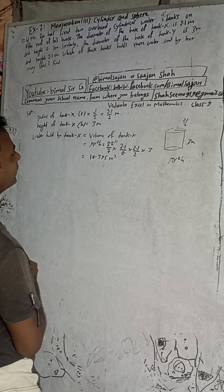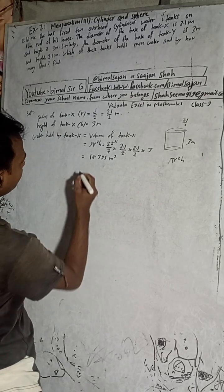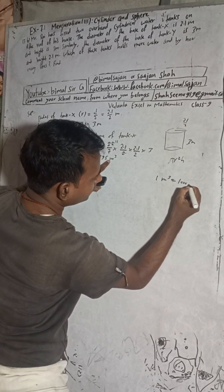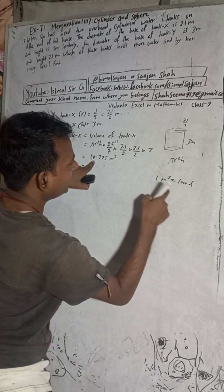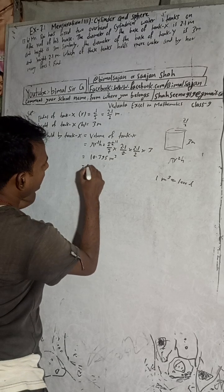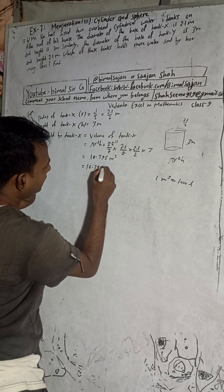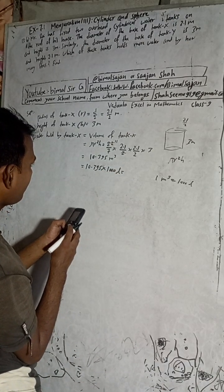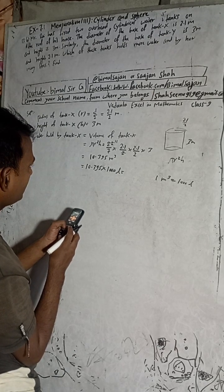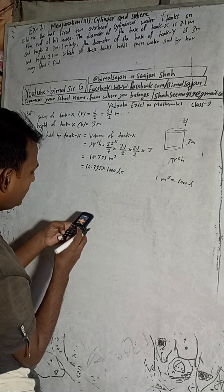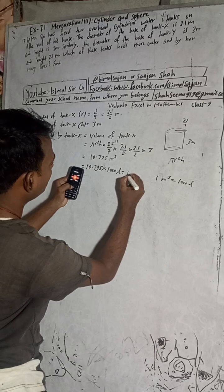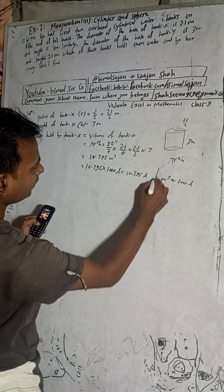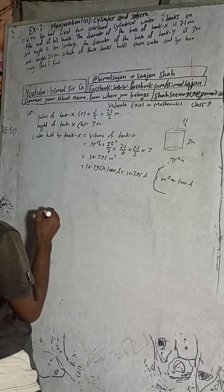We have to find the answer in liters. We know that 1 meter cube equals 1000 liters. So 10.395 meter cube into 1000 equals 10,395 liters. This is the volume of tank X.